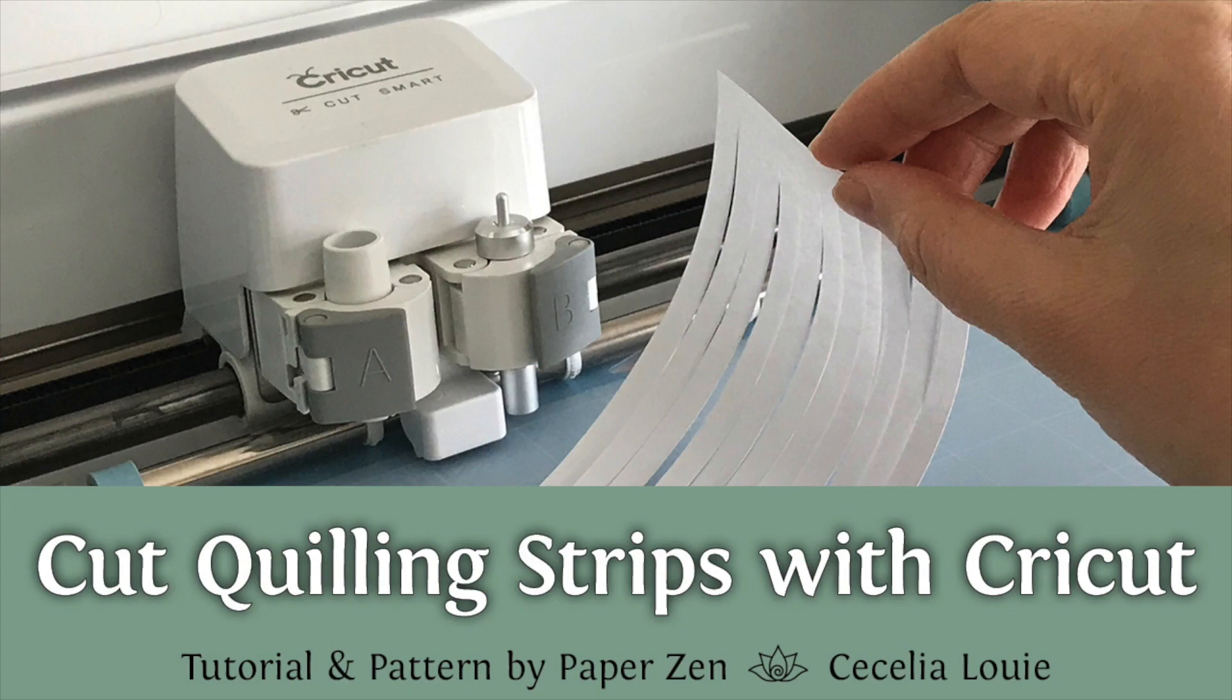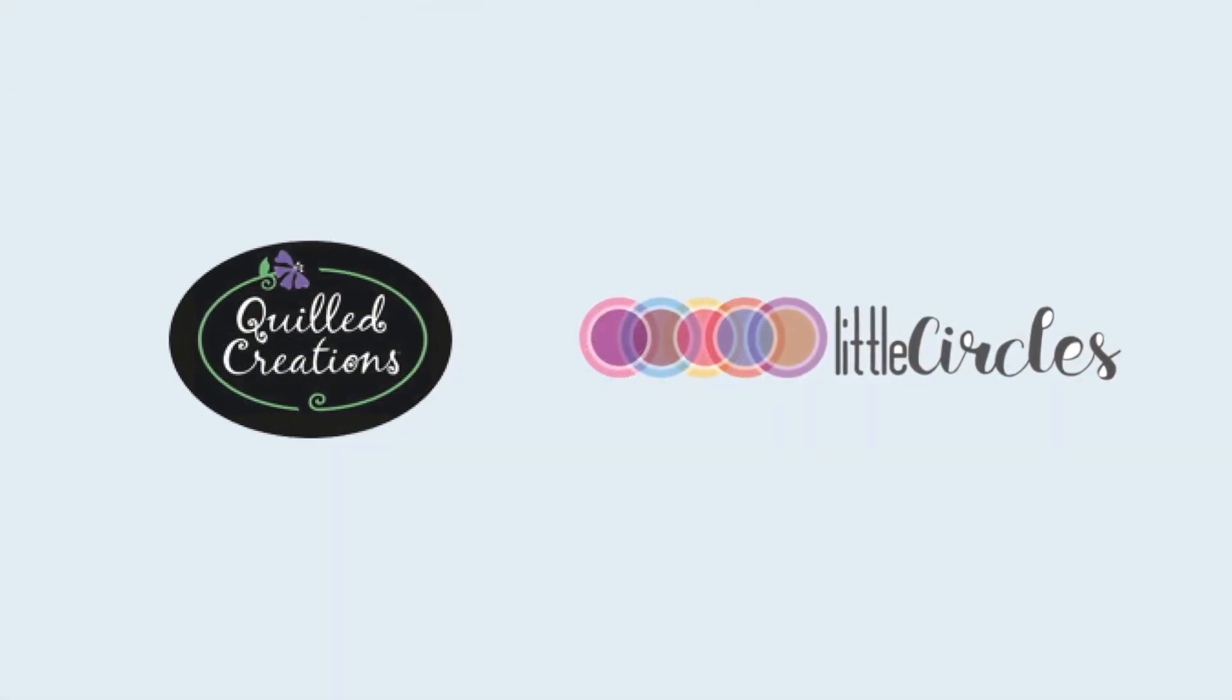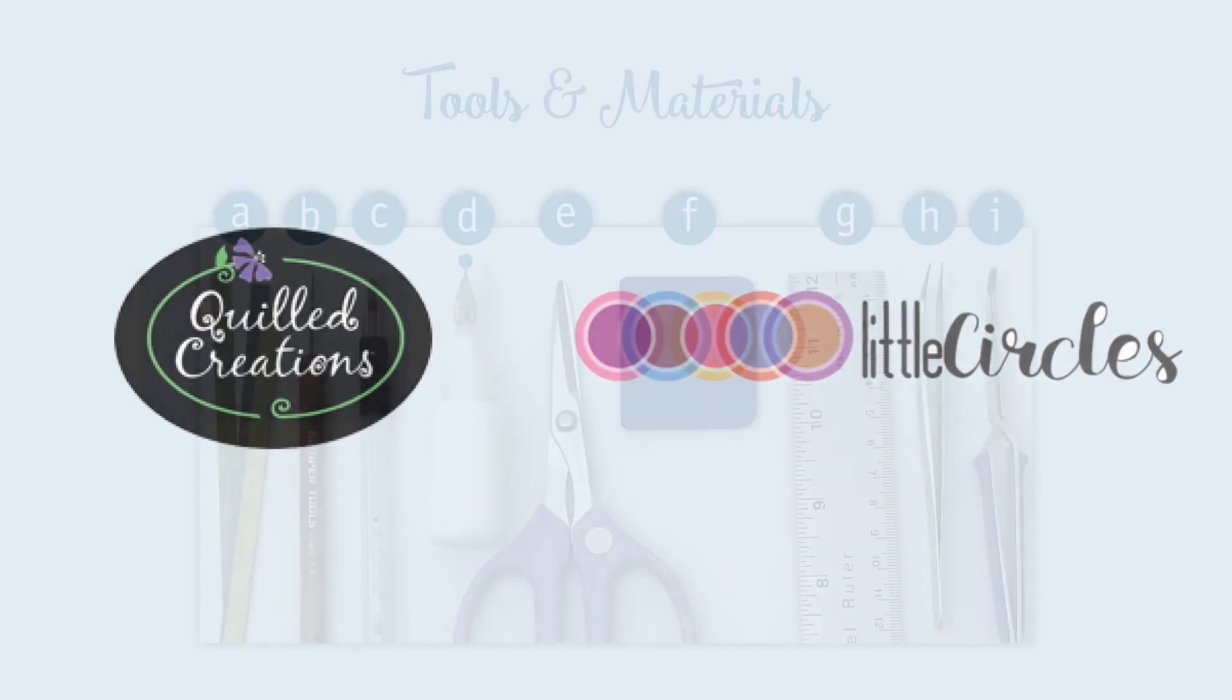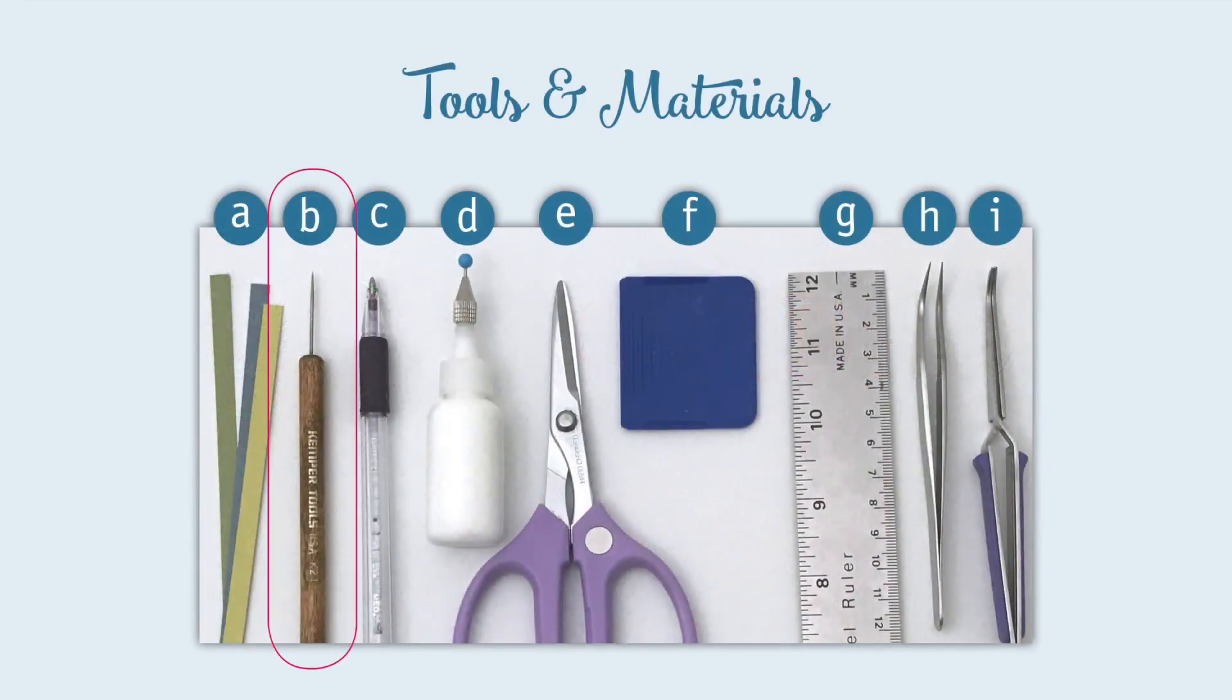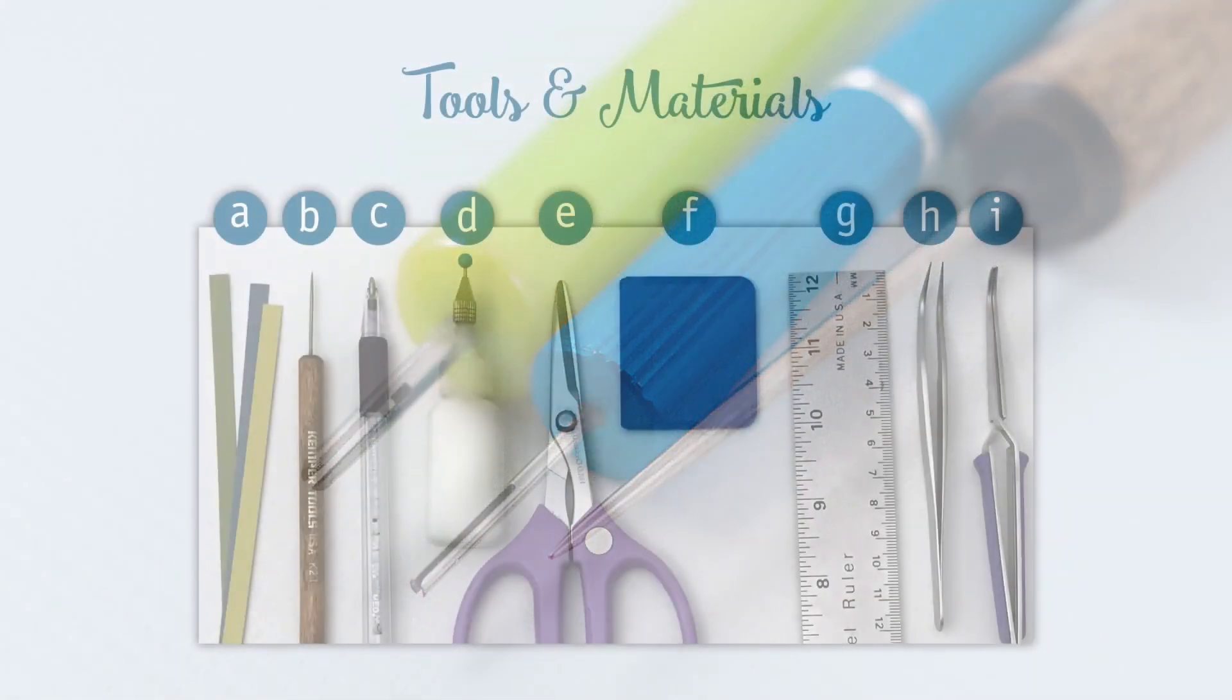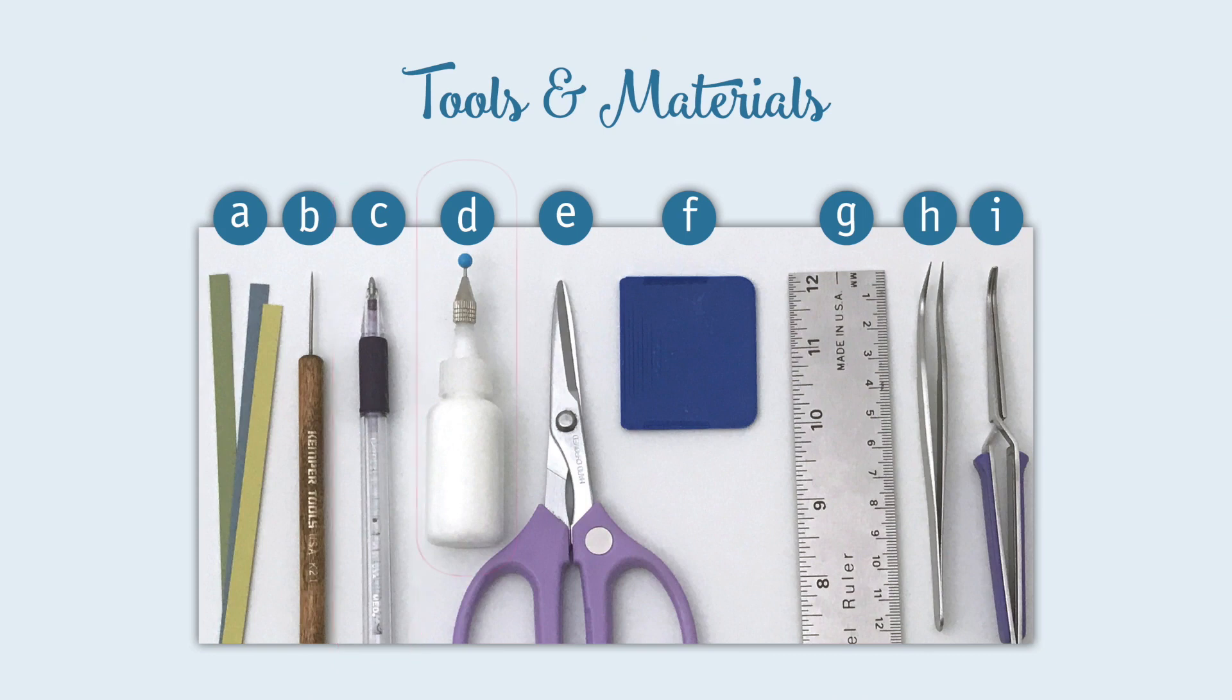You can buy thicker strips from companies like Quilled Creations or Little Circles. You'll also need a slotted or needle quilling tool, a scoring tool such as a dried up pen, clear drying glue. I prefer Aleene's Tacky Glue in a fine tip glue bottle.